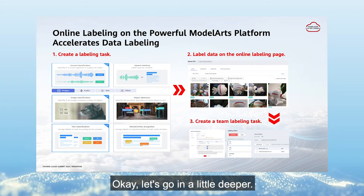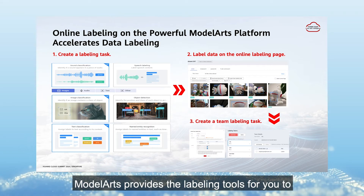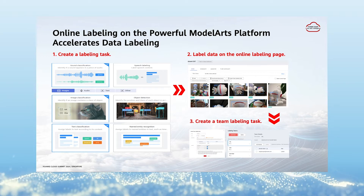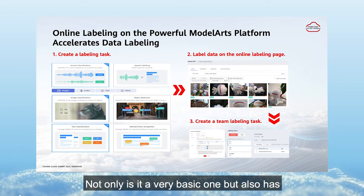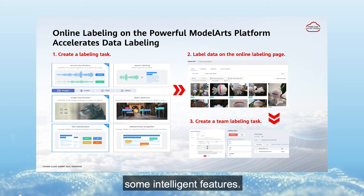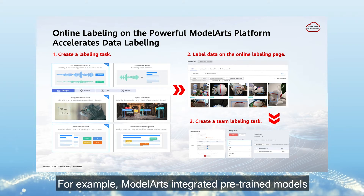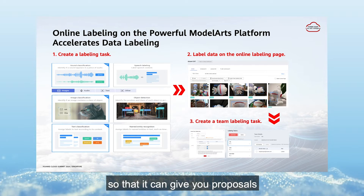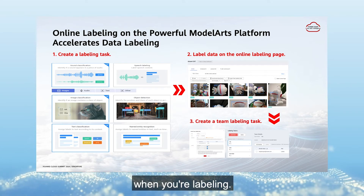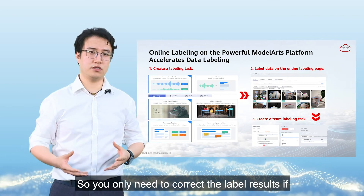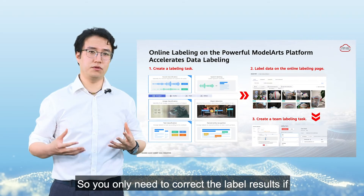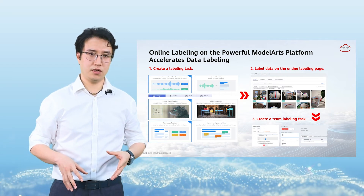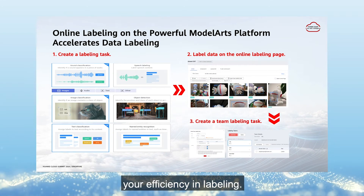Model Arts provides labeling tools for you to label your dataset online — not only basic labeling, but also intelligent features. For example, Model Arts integrates pre-trained models that give you labeling proposals automatically. You only need to correct the label results if they are wrong, rather than labeling each item yourself. This highly improves your efficiency in labeling.